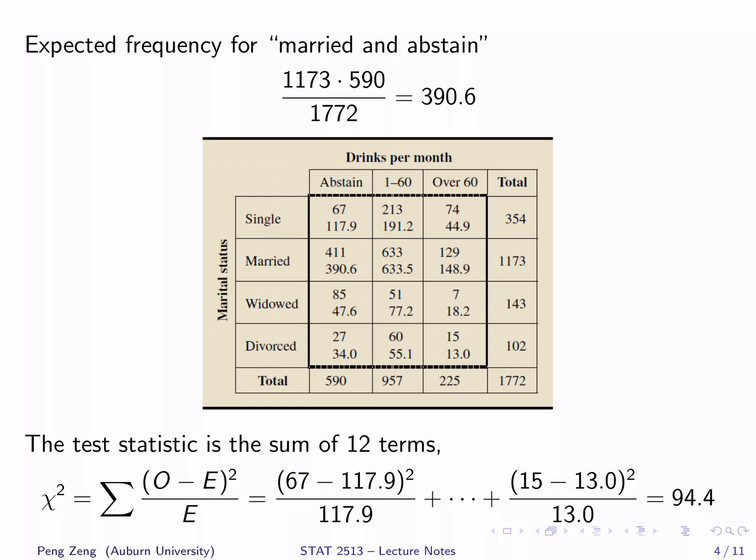We can calculate the test statistic for comparing observed frequencies with expected frequencies. It is similar to the one used for the goodness of fit test. It is the sum of (O minus E) squared divided by E. We calculate this quantity for each cell of the table. There are 12 cells within the thick black lines, so we calculate 12 such terms and add them together. The test statistic is 94.4.